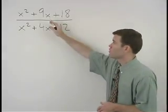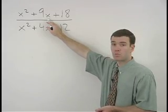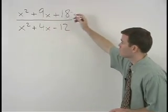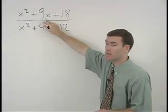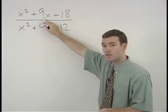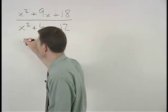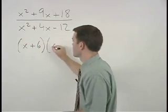So factoring the numerator in this problem, we have a trinomial that factors as the product of two binomials. We're looking for factors of positive 18 that add to positive 9, which are positive 6 and positive 3. So we have x plus 6 times x plus 3.